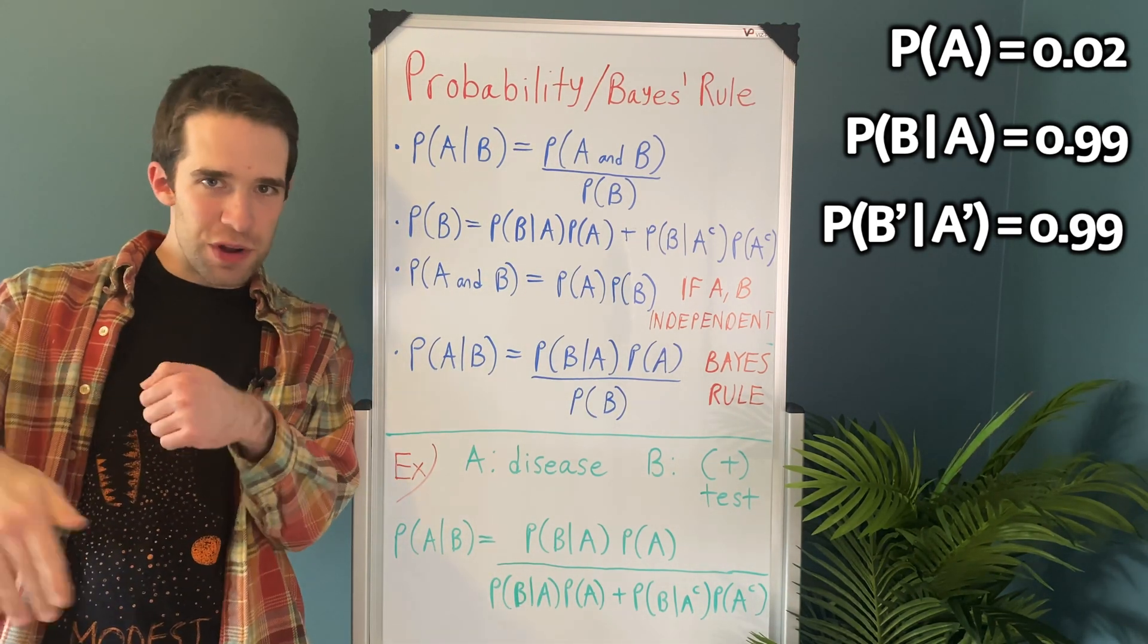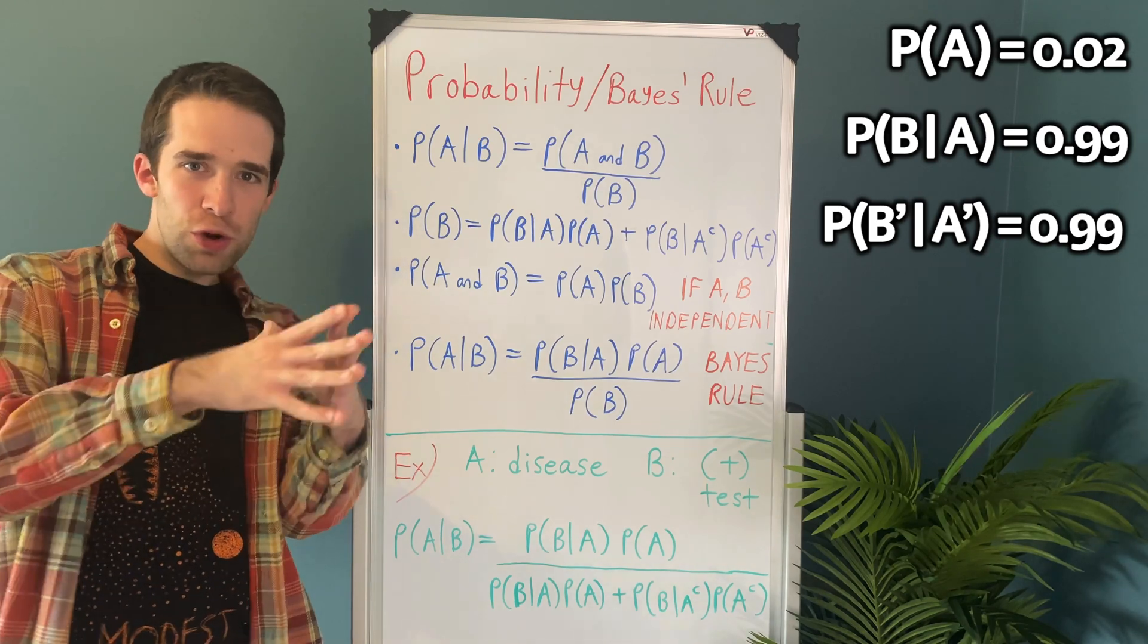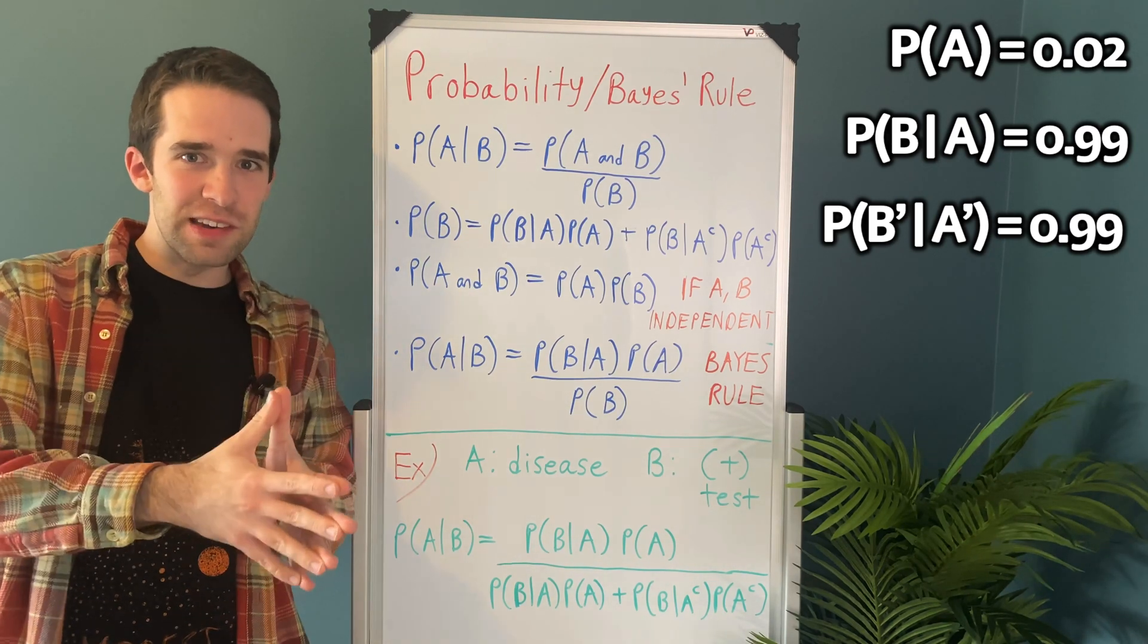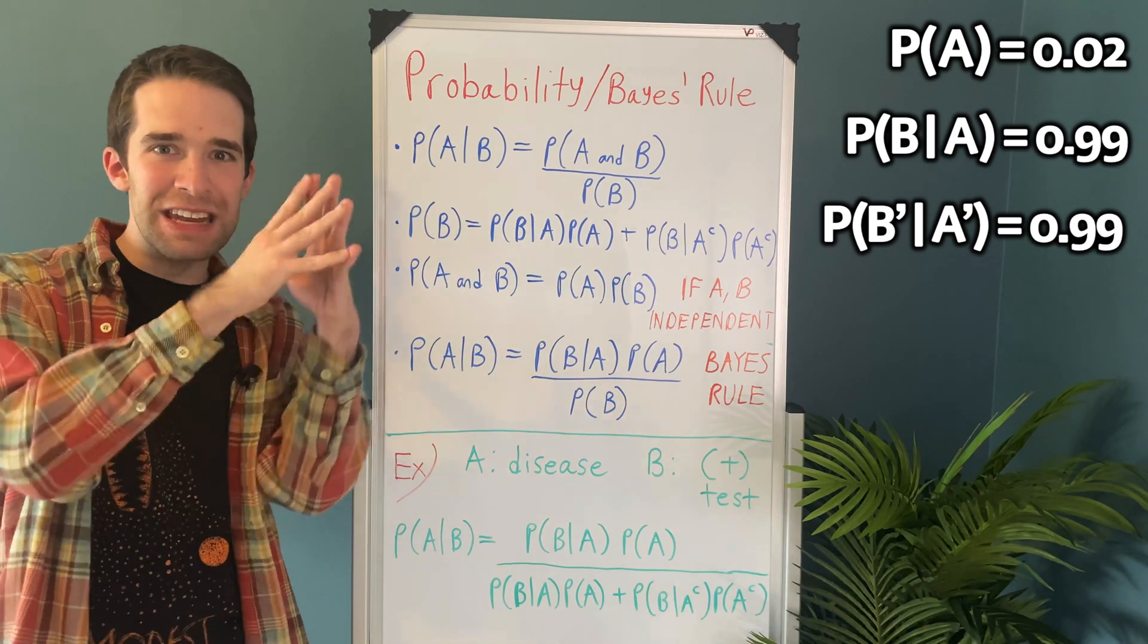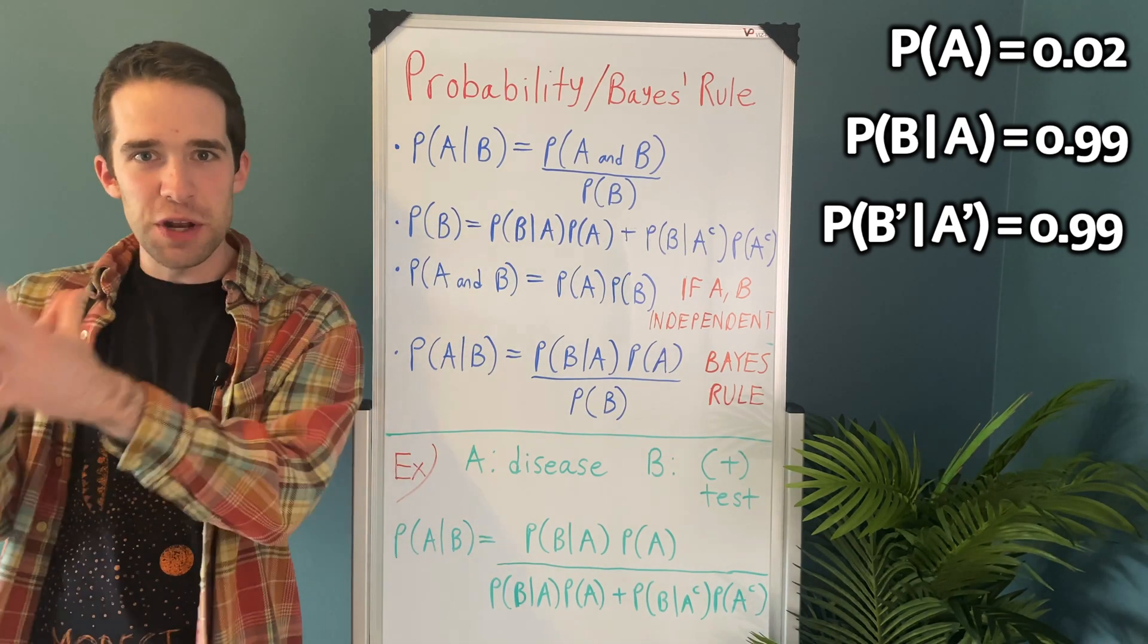And these exact two terms are the first part of the denominator as well. The second part of the denominator is where this gets pretty interesting. So we're directly given the specificity. That is, we have the probability that we get a negative test result if we don't have the disease.